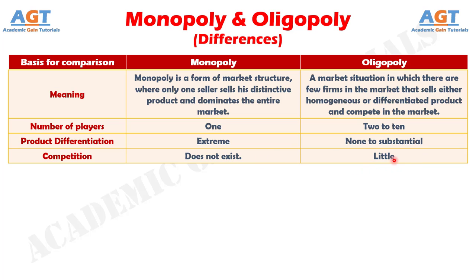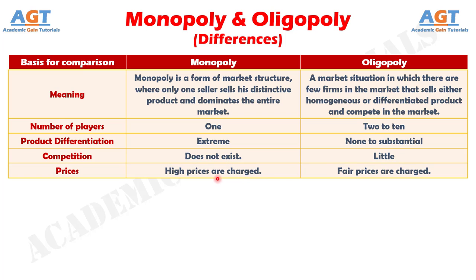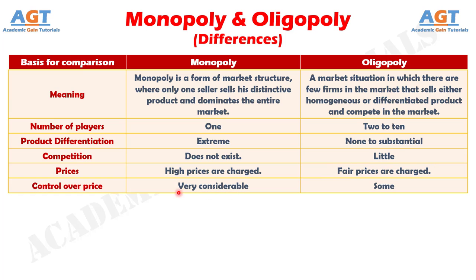No. 5: High prices are charged in Monopoly, whereas fair prices are charged in Oligopoly. No. 6: Control over price is very considerable in Monopoly, whereas control over price is little in Oligopoly.